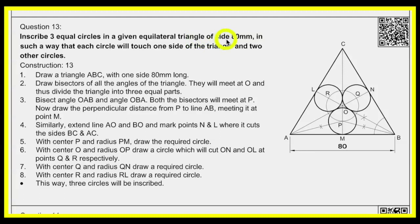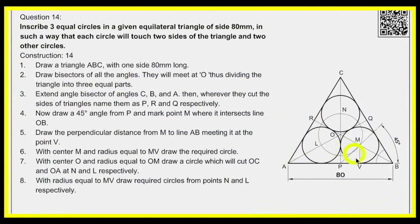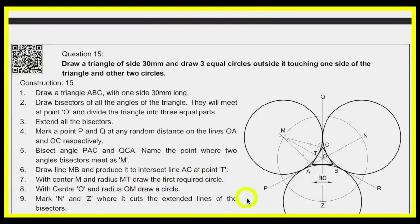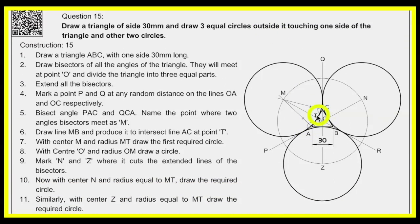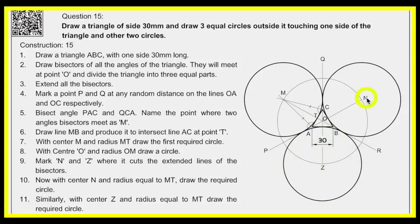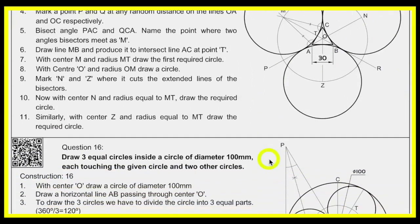They can give you triangle, square, or pentagon — the circle is always inside. Now, for drawing three circles outside a triangle: draw the triangle, mark midpoints of all sides, draw lines from O to A, O to B, and O to C extended. Then bisect the external angle to get point M and draw the circle. Transfer O to M to get the mid-circle, and from points Z and N draw the respective circles.